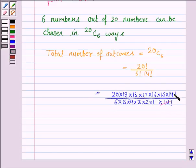So simplifying this, we get the total number of outcomes as 38,760.